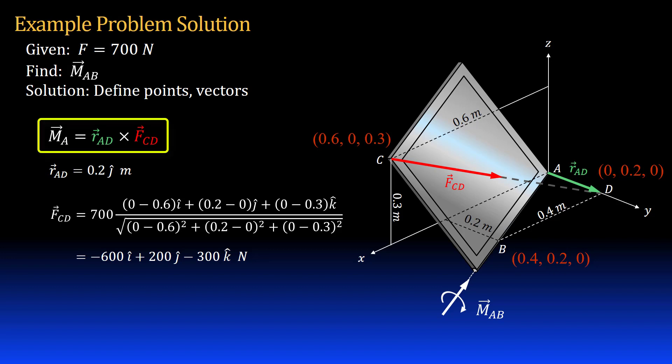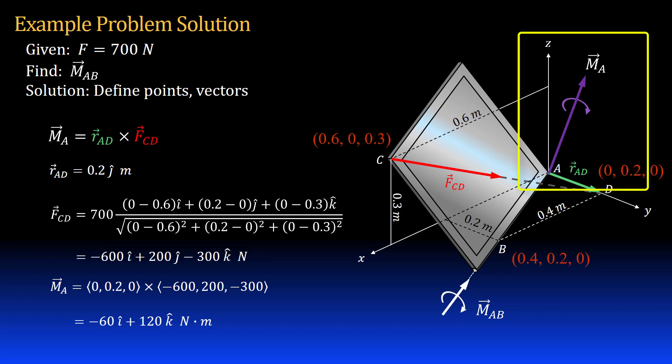Now I can find my moment vector about point A by crossing my position vector r_AD with my force vector. Glossing over the math I get negative 60i plus 120k newton meters. The j component is 0. Here's what that vector looks like. It is at point A and is perpendicular to the plane made by position vector r_AD and force vector F_CD.